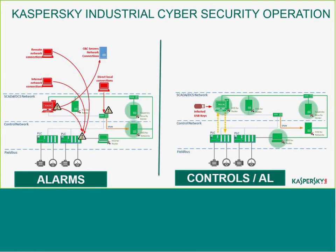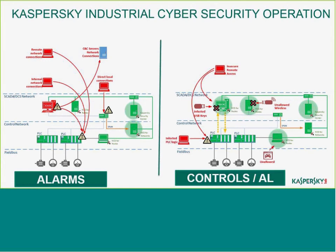If someone inside your network tries to use an infected USB key, it will be blocked. If someone uses unauthorized wireless — for example, trying to share internet from a smartphone or plugging in a 3G or 4G mobile device — it will be blocked. Insecure remote access to PLCs and SCADA will trigger alarms, and infected PLC logic will alarm you. Even if someone tries to plug in a joystick to play games inside your factory, it will be blocked — that's not the correct use for that environment. If malware tries to infect the system, the anti-malware component will block it.